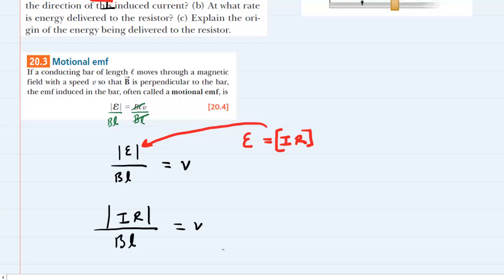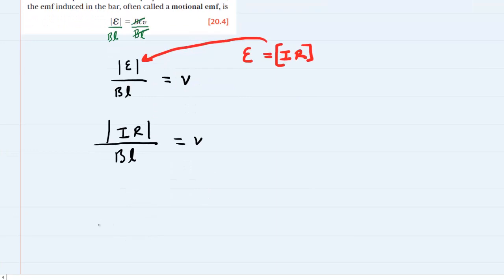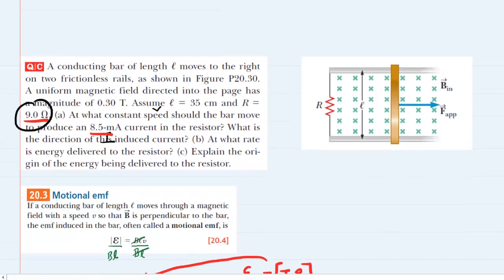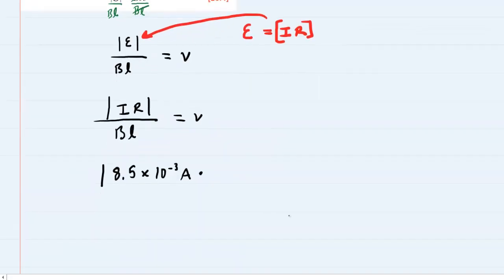We can plug in all the known values. Again, the current was 8.5 milliamps. So make sure, because it's in milliamps, that you convert that into amps. To do that, you multiply by 10 to the minus 3. That will put the answer for current in amps, and you're going to multiply that by the resistance value. The resistance was given in the question as 9 ohms. That is a standard unit, so you don't need to convert that. So you'll just have 9 ohms.